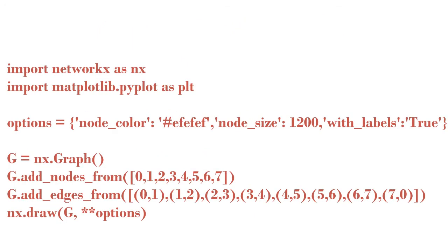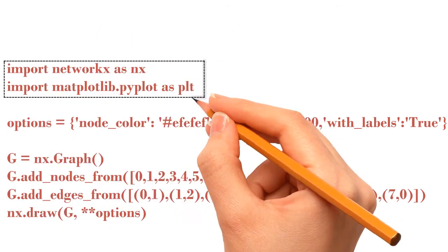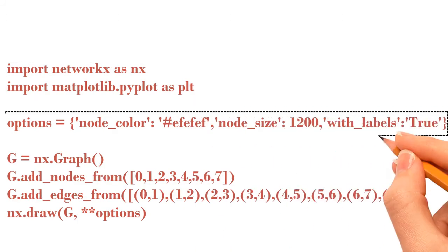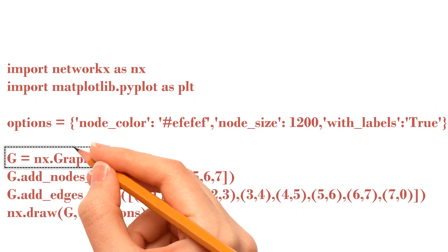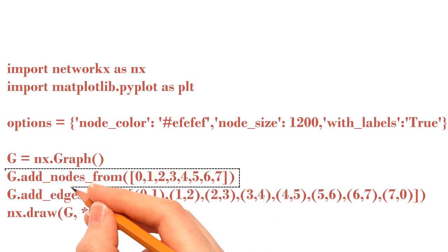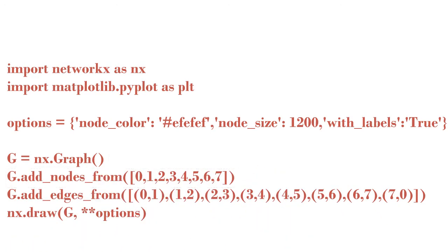Following code will be used to generate the graph. This code imports libraries. This code will add specified node properties. This code will create empty graph. This code will create node from 0 to 7. This code will draw edges connecting the nodes. And this code will draw complete graph with the specified properties.